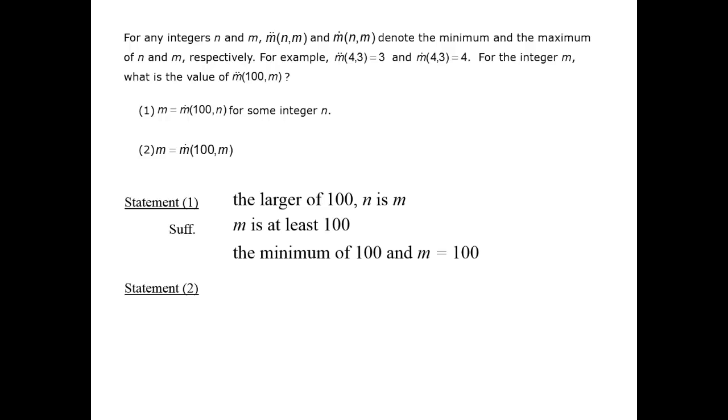Statement 2 tells us something fairly similar. m now is the maximum value, m1 dot, of 100 and m. Similar logic allows us to conclude that, once again, m is at least 100.